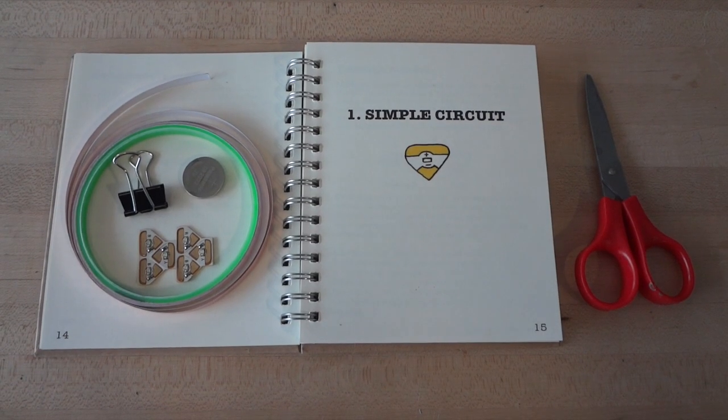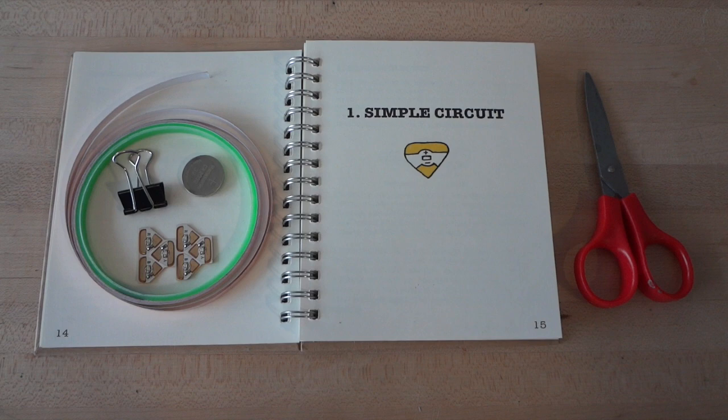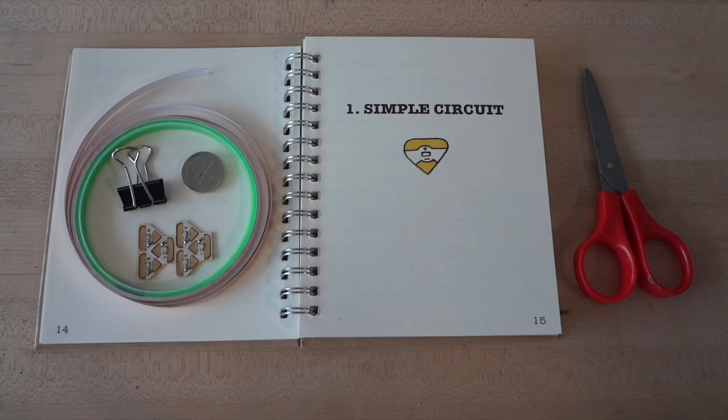In this tutorial, you will need one LED sticker, one coin cell battery, a binder clip, copper foil tape, and scissors to cut your tape.